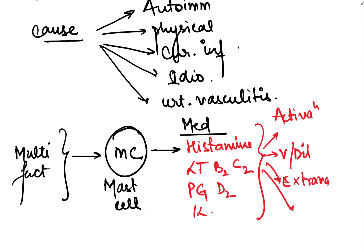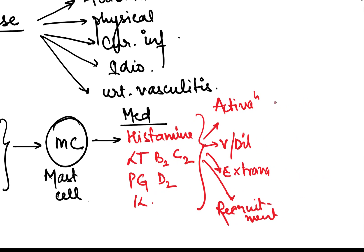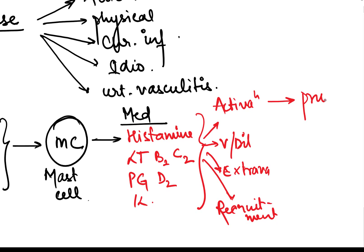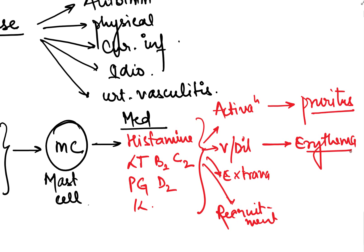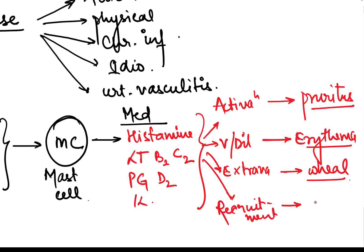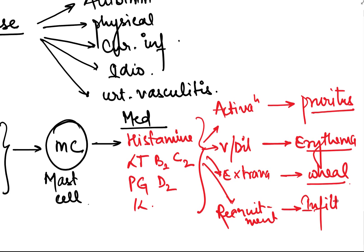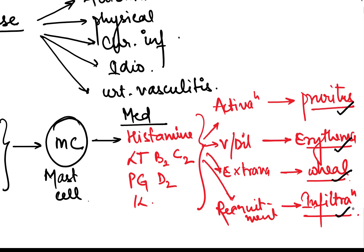These inflammatory mediators lead to activation of inflammatory cells, vasodilatation, and extravasation of inflammatory cells from the capillaries with recruitment of further inflammatory cells. Due to activation of these mediators, it leads to pruritus — the lesions become itchy. Due to vasodilatation, erythema develops, and due to extravasation of fluid and inflammatory cells, a wheal forms.